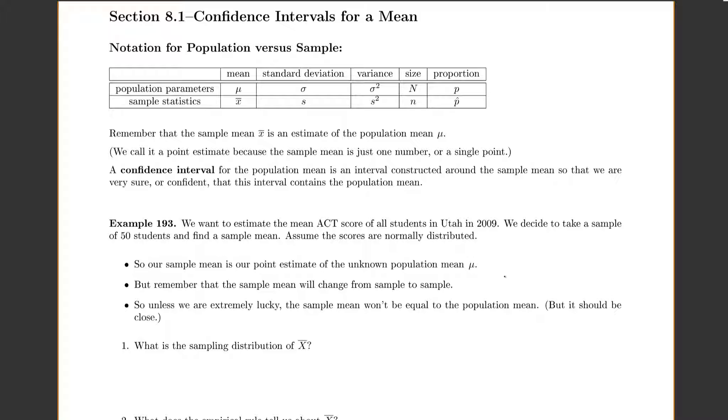But instead of just giving someone a single point and saying, okay, our estimate is 20, that's just one point, what we can do to make ourselves more confident that we're going to be correct is we can actually construct an interval around our sample mean. So that we're very sure or confident that this interval contains the population mean.